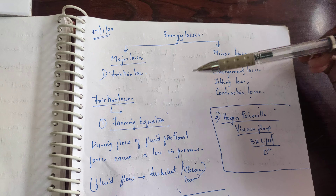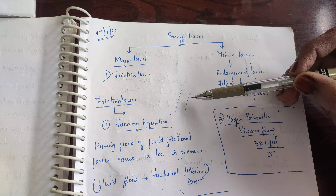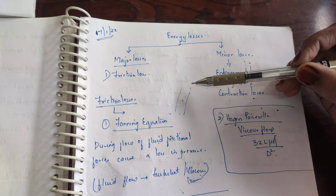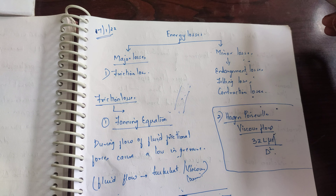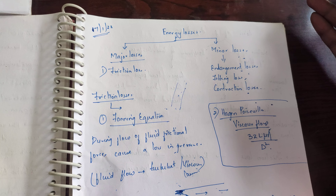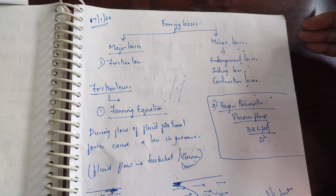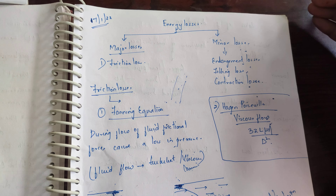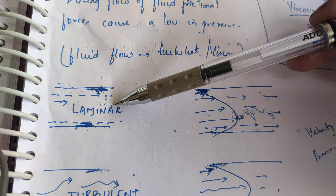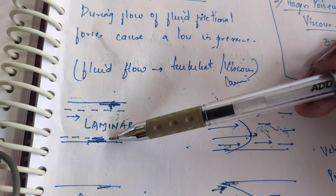The Fanning equation states that in a pipeline whenever a liquid is flowing, there will be some frictional forces acting on it, and due to that friction there will be a loss in pressure and a loss in velocity of the fluid. To understand the Fanning equation, we will look at two diagrams.